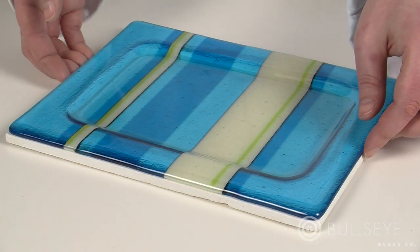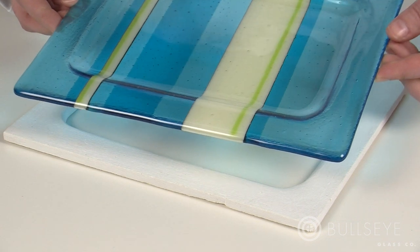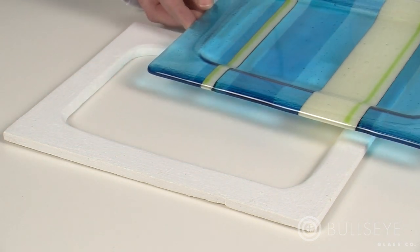Rigidized ceramic fiberboard also expands and contracts less than glass and is also good for slumping into.